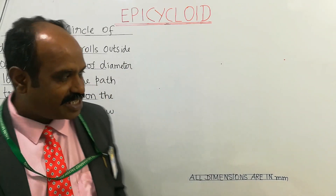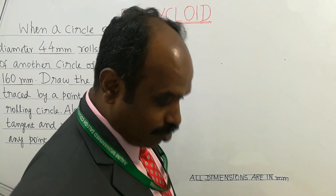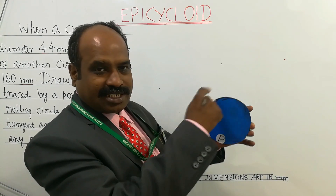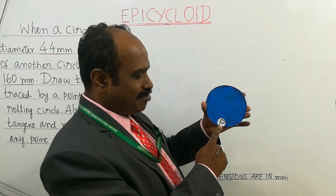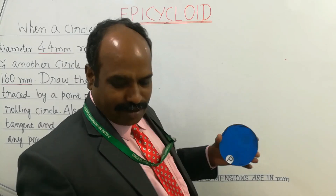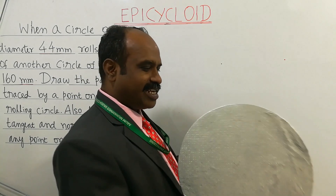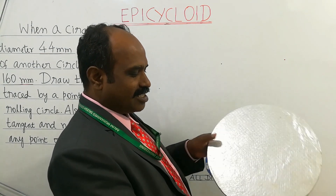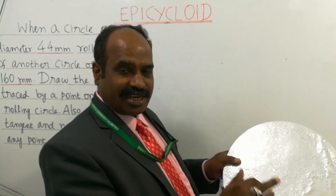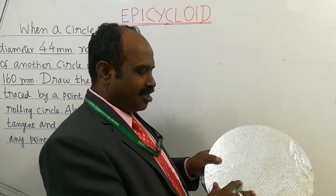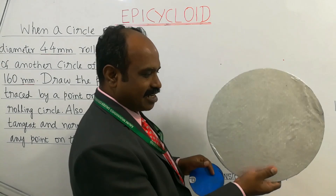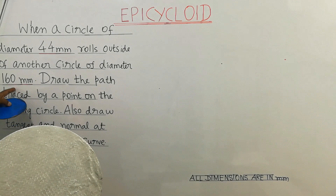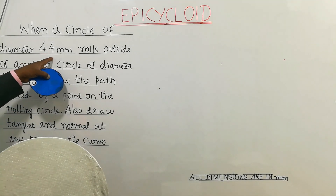So basically what is epicycloid? Consider a circle called the rolling circle — this blue color one is called the rolling circle. On the circumference of the rolling circle, a point P is marked. One more circle is taken called the directing circle or base circle — the gray/silver color circle is the fixed circle, otherwise called the directing circle or base circle. The bigger fixed circle has a diameter of 160 mm, and the rolling circle has a diameter of 44 mm.